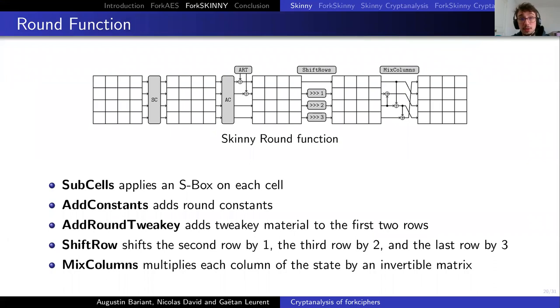The round function of ForkSkinny is described as follows. First, there is a SubCell operation where we apply an S-box to each of the 16 cells. Then there is an AddConstant operation where we add a constant to the internal state. Then there is an AddRoundTweakey where we add tweaking material to the first row of the internal state. Then a ShiftRow operation, like in AES, and a MixColumn operation, which is described by the circuit in the picture over there.